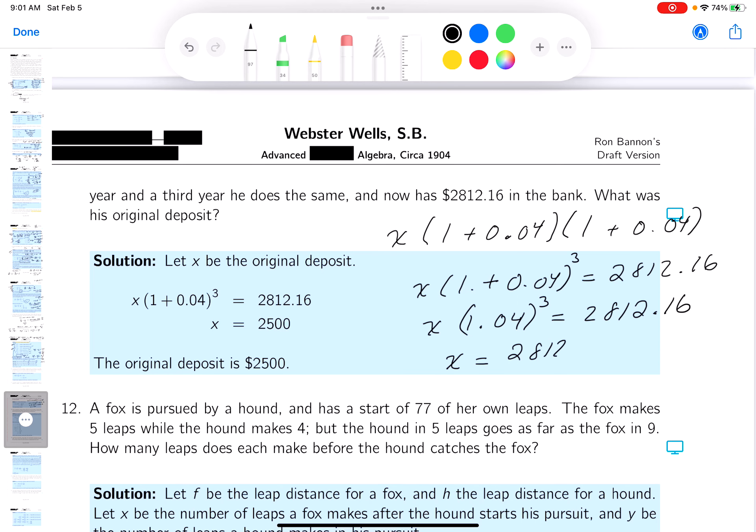What you could do is just simply take your calculators out, take the number 2812.16, and you could easily divide it by 1.04 cubed. And if you do so on a calculator, you're going to find out it's exactly 2,500.